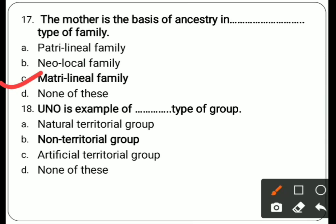Eighteenth question: UNO is an example of dash dash type of group. Options are natural territorial group, non-territorial group, artificial territorial group, none of these. Correct answer is non-territorial — it has neither natural nor man-made boundaries; it is an international organization.